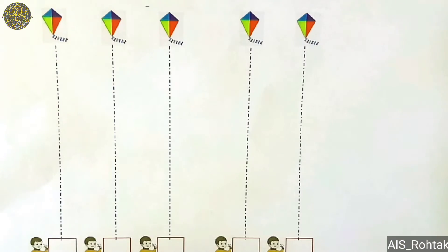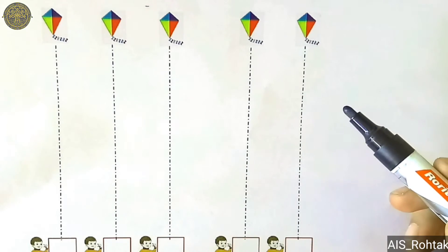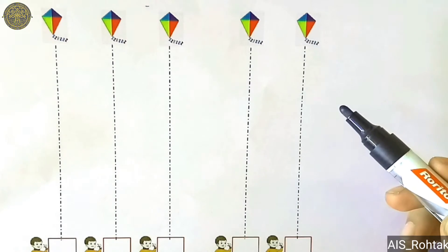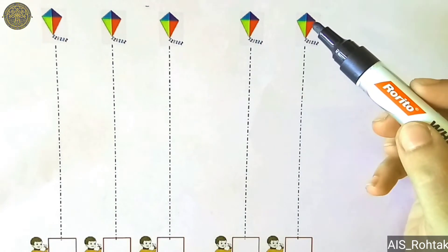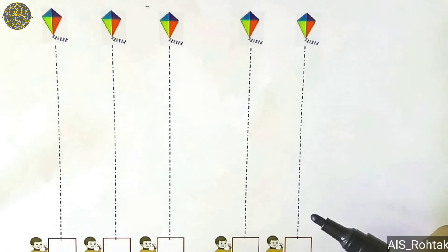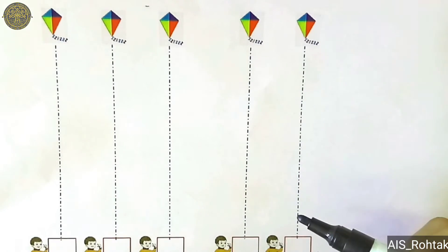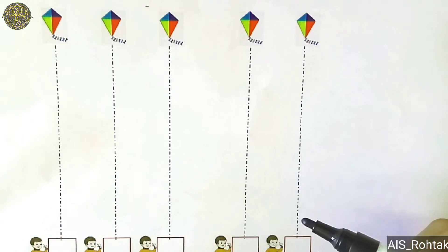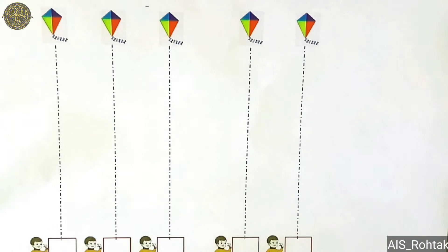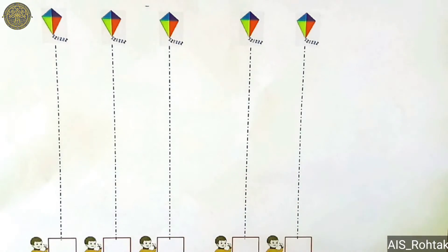So students, look at this picture. In this picture the kite is going towards the boy in standing position. So let's draw a standing line from the kite to the boy.